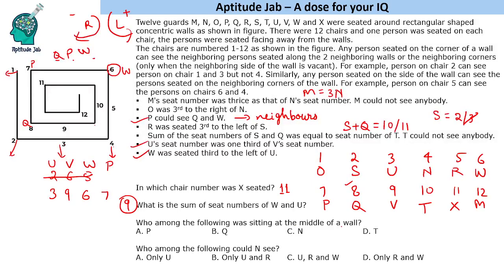Among the following, who was sitting at the middle of a wall out of P, Q, N, T? P is 7, that is at the corner. Q is 8, again at a corner. N is 4, again corner. So it should be T. T is 10, that is at the center of a wall.